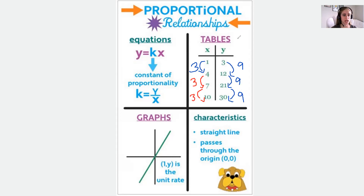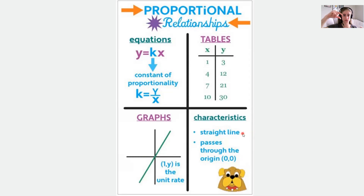Last but not least, a proportional relationship can be represented on a graph. When it's on a graph, what tells us it's proportional is that it is a straight line — that tells us it's constant, changing by the same amount. The second part is it has to pass through the origin, through the point 0, 0. Those two things ensure that your line represents a proportional relationship.